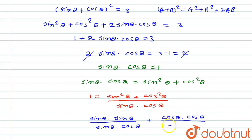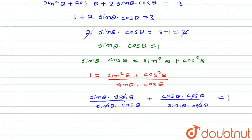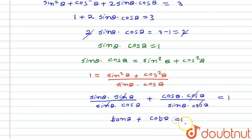Sine squared theta plus cos squared theta divided by sine theta into cos theta equals one. Splitting the fraction: cos theta cancels and sin theta cancels, giving sin theta upon cos theta plus cos theta upon sin theta, which is nothing but tan theta plus cot theta, which equals one.